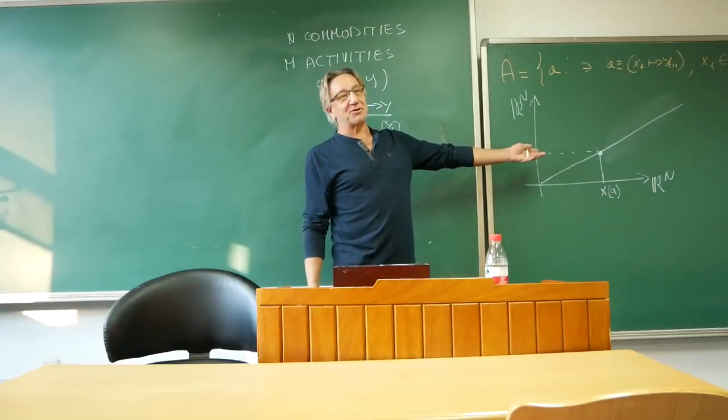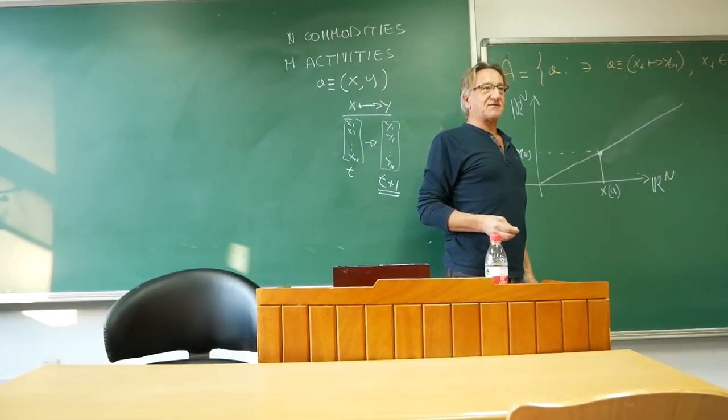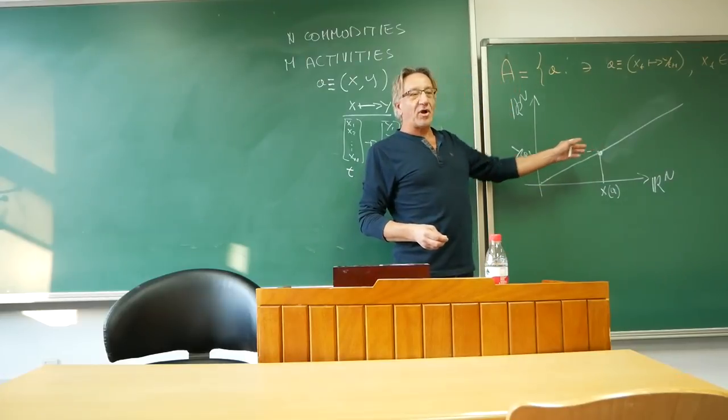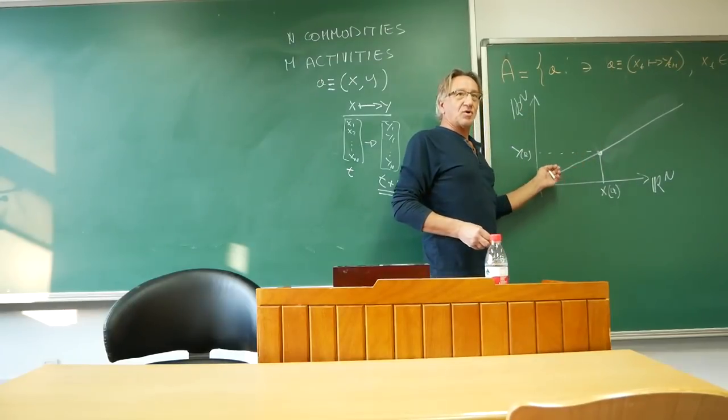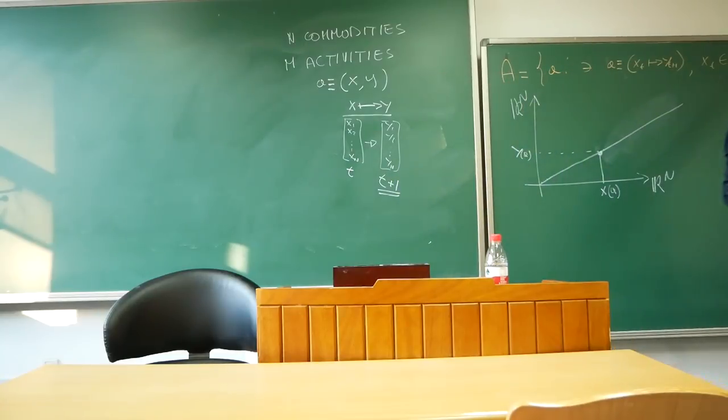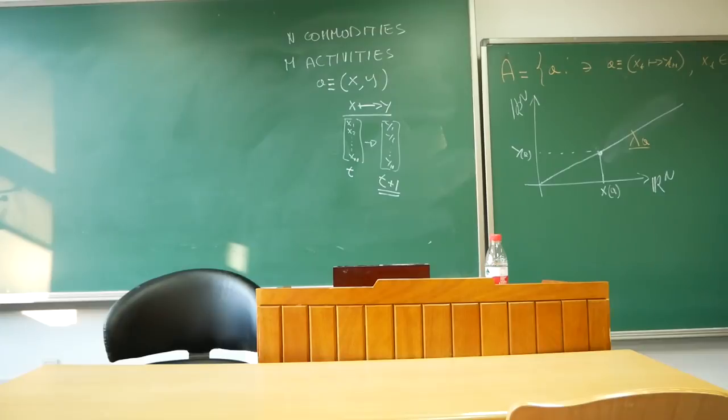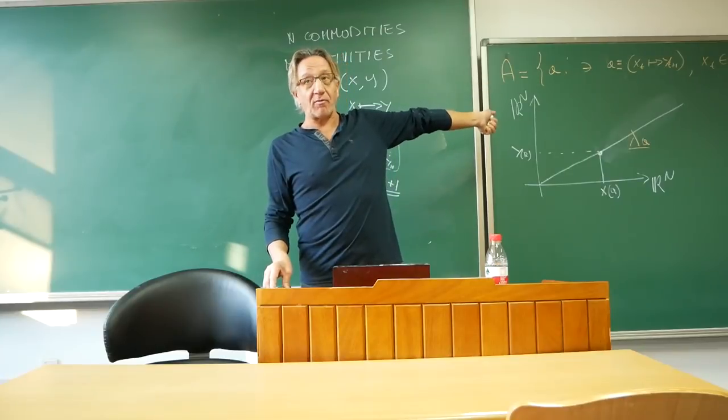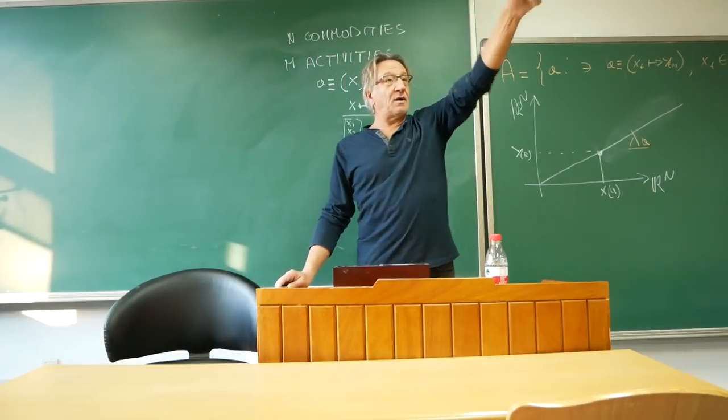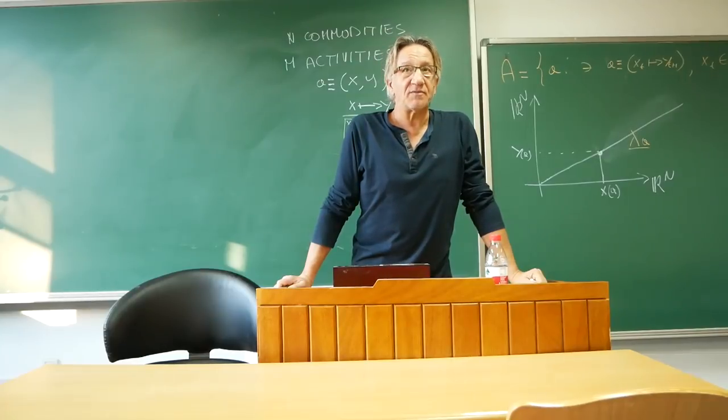What the replication argument says is that from a theoretical point of view, if A is an activity, then lambda A is also an activity. Hence, if an activity is a point, more properly, it defines a segment pointed at the origin. We don't allow for negative inputs and negative output. We call it a ray from the origin. You will hear people in the old literature talk about von Neumann ray. That's what a von Neumann ray is. It's a particular activity multiplied by lambda for all values of lambda between zero and infinity.